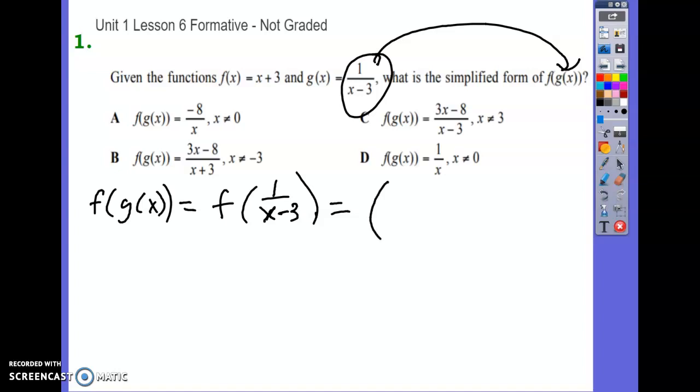So that's going to be, and I'll put it in parentheses, one over x minus three plus three. Now, we can't add those together because we've got basically fractions with different denominators. So I'm going to make my three have the denominator I want it to have.